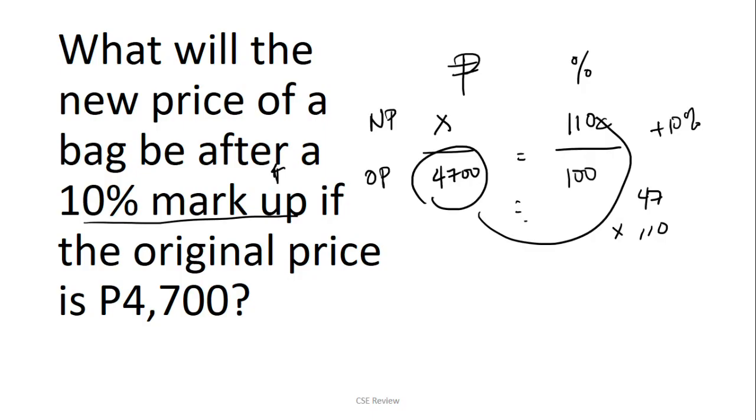Or you can make it even easier by using smallest terms. So you can use X over 4,700 is equal to 11 over 10. Kasi pareho naman silang divisible by 10. Pareho silang may 0. So you can cancel it. So 4,700 divided by 10, which is 470, times 11. So 470 times 11, you can use 4,700, which is times 10. And itadagdag mo lang yung isa pa, para mabuo mo yung 11, which is 470. It's still going to give us 5,170, which is still the correct answer.